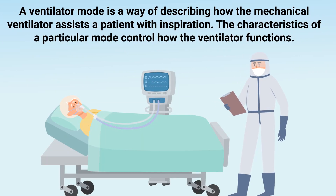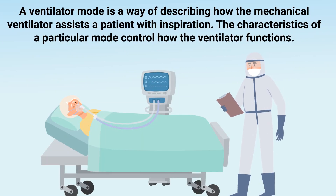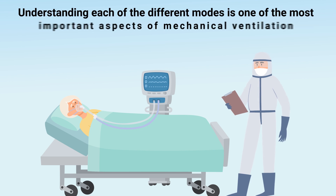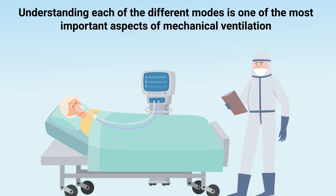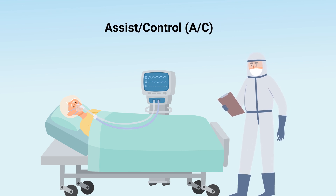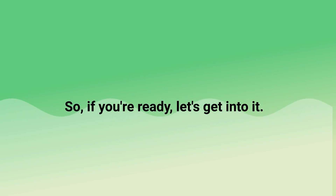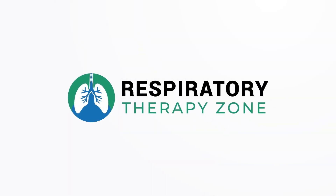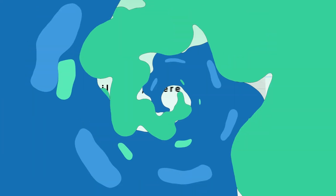A ventilator mode is a way of describing how the mechanical ventilator assists a patient with inspiration. The characteristics of a particular mode control how the ventilator functions, and understanding each of the different modes is one of the most important aspects of mechanical ventilation. In this video, we are going to be talking about assist control.